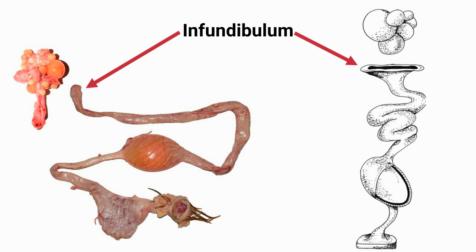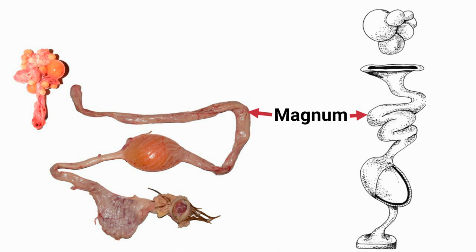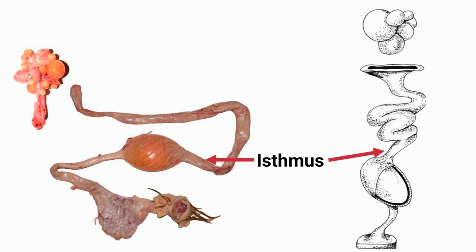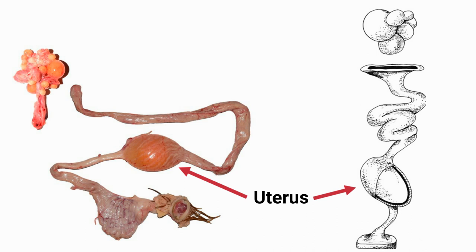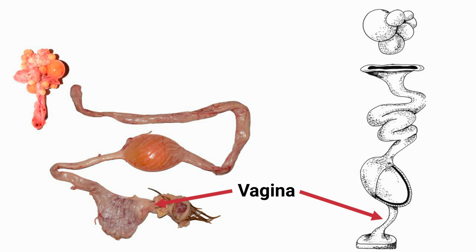The third part is the isthmus, where the shell skin is formed. The fourth part is the uterus, where the calcareous shell is formed and the egg development is finished. The fifth part is the muscular vagina. Here, the cuticle is added to the egg and it is prepared for laying. The vagina also plays a role in sperm storage.